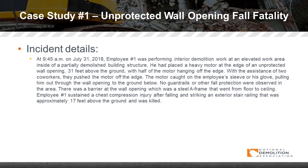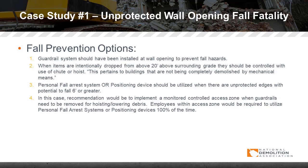No guardrails or other fall protection were observed in the area. There was a barrier at the wall opening — a steel A-frame that went from floor to ceiling. Employee one sustained a chest compression injury after falling and striking an exterior stair railing approximately 17 feet above the ground, and he was killed.